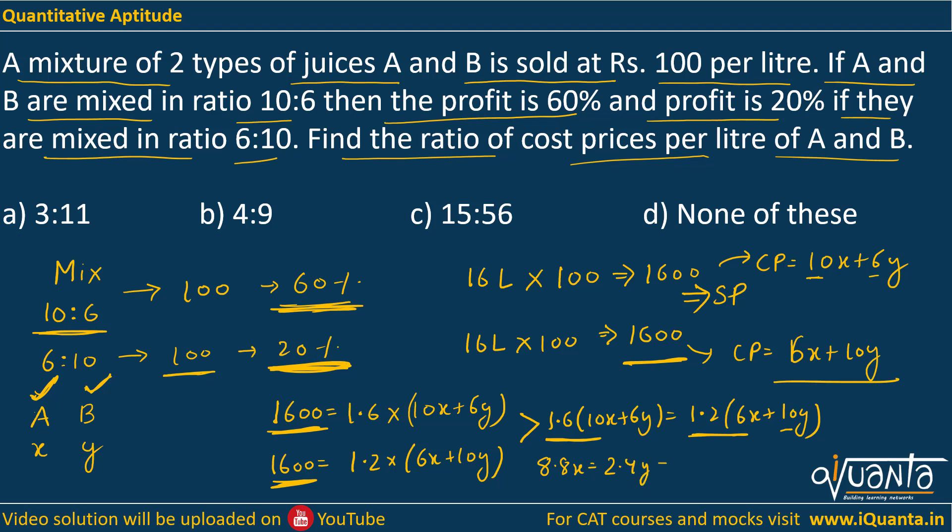If you simplify this further you will be getting x upon y equals to 24 upon 88, which means 3:11. So 3:11 will be the correct answer to this question. It was a simple application of profit and loss and we found the answer as 3:11. I hope the explanation is clear. If there is any doubt please ask again. Thank you.